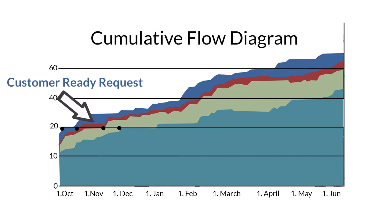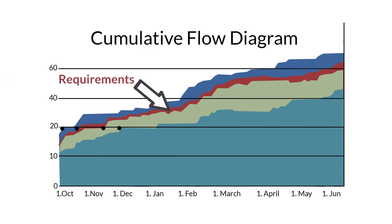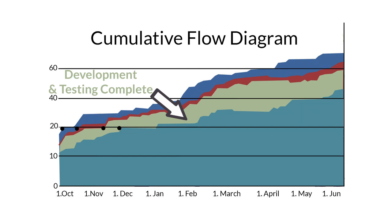The diagram shows data in an area graph displaying the total volume of work for any of the process stages. In this example, the software development company has four stages that become our four areas of the CFD. These are customer ready requests in blue, requirements set in red, and development and testing complete in green.